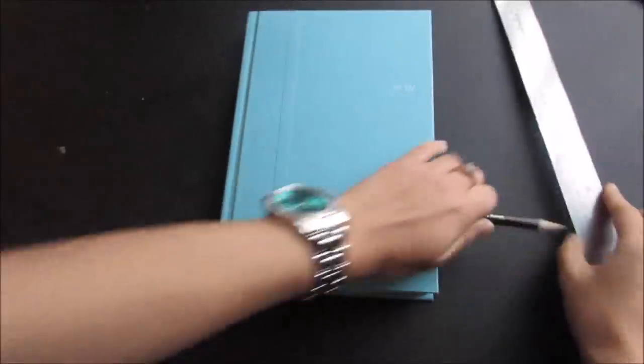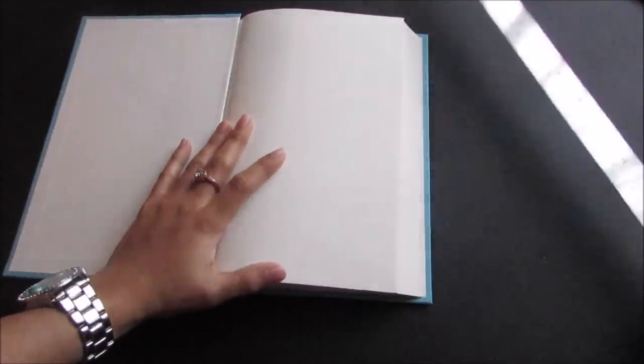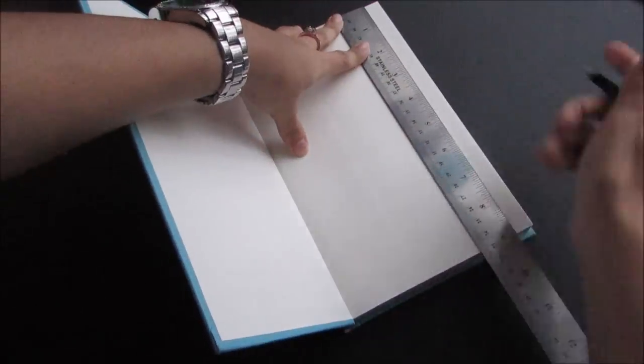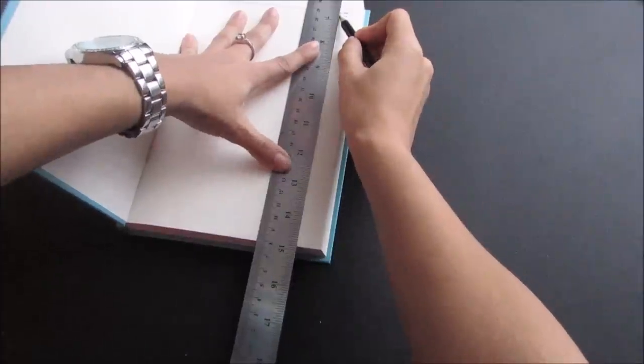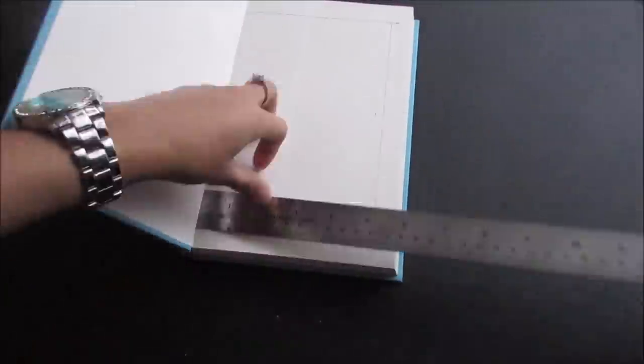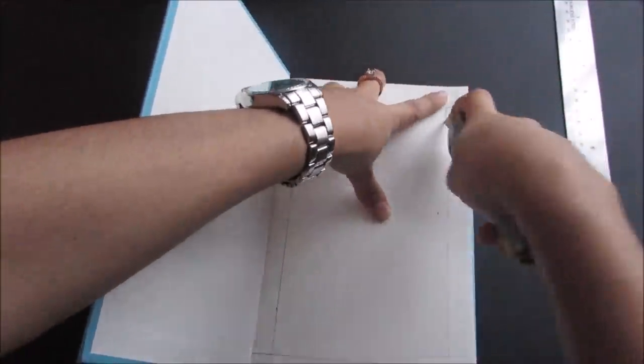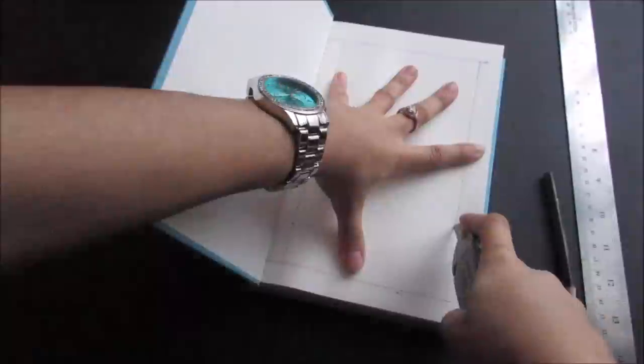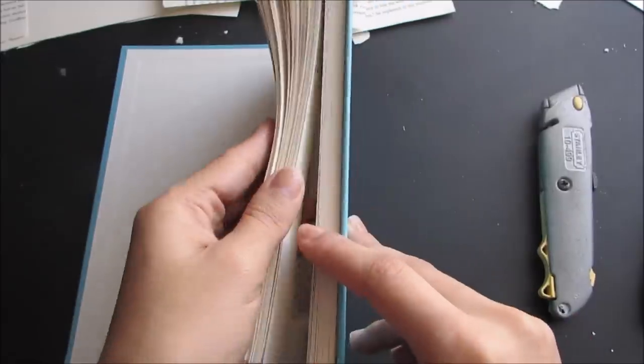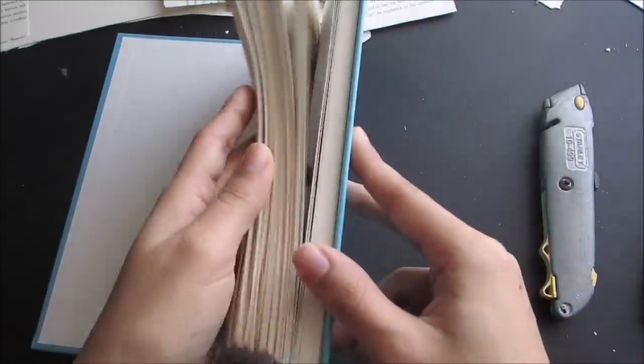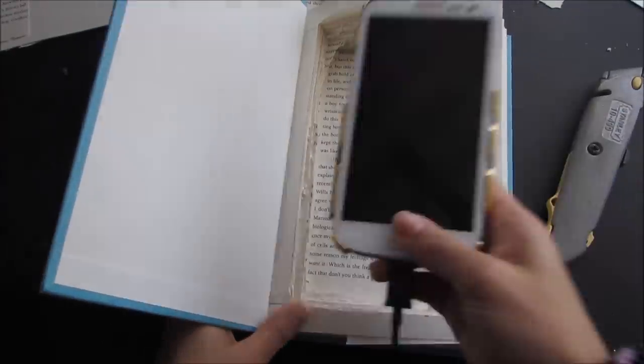Start off by taking off the cover of the book that you chose. Now take your pencil and ruler and you're going to want to draw a border or rectangle. Make sure the lines are even and all the borders are the same size. These lines will be your guidelines on where to cut. Once you have your border start cutting with your exacto knife. Please ask your parents for permission before using any sharp object. Once you're satisfied with how much you've cut, make sure the item you're going to put inside fits in the hole.